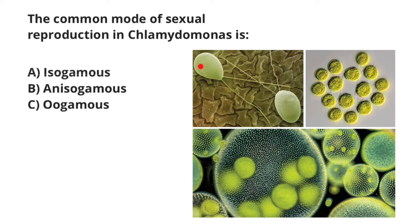Take a look at how this unicellular alga looks like. You would notice a resemblance with animals, because it can move freely with these two flagella. And instead of cellulose, it has glycoproteins as a structural material. But it can photosynthesize, and unlike blue-green algae, which are bacteria, this is a eukaryotic organism.